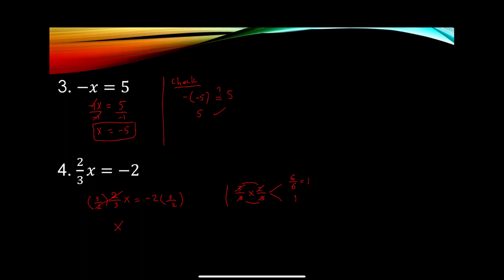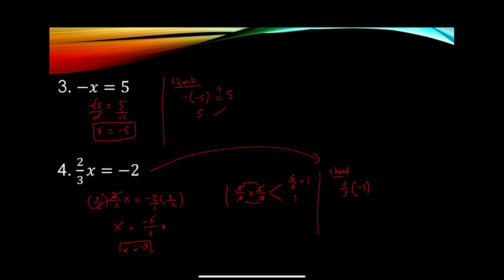On the right side: -2 can be written as -2/1. Then (-2/1) × (3/2) = -6/2 = -3. So x = -3. Checking: (2/3) × (-3) = -6/3 = -2, which matches the right side. The answer is correct.